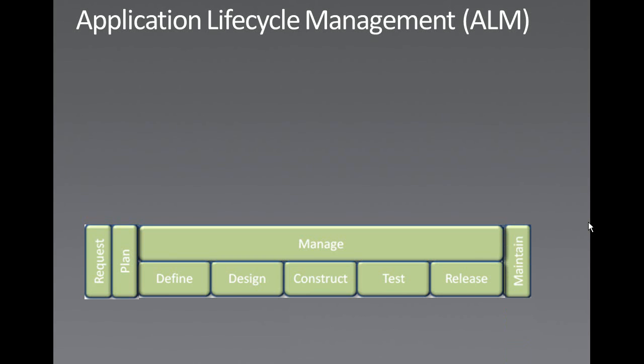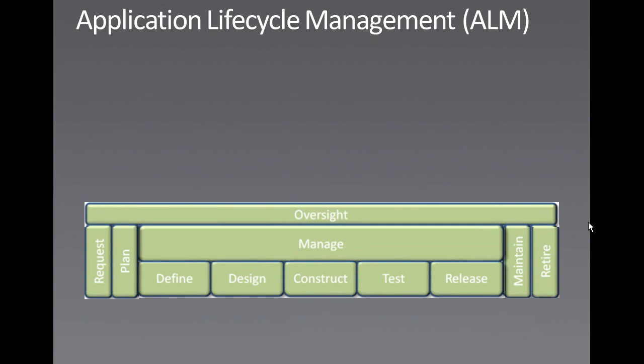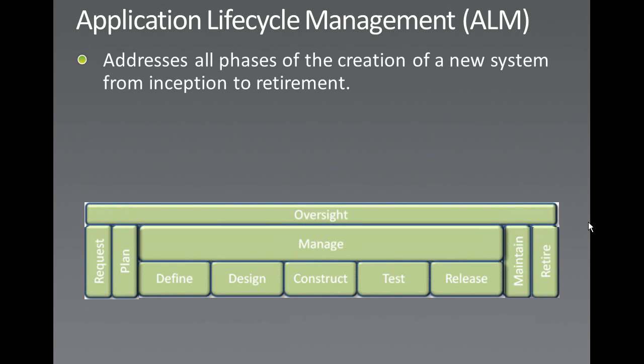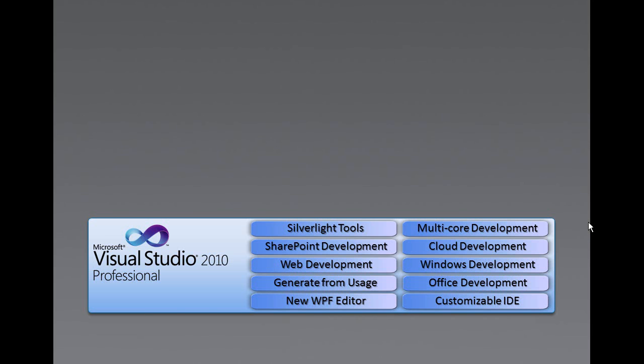After that there is something called maintaining the application, which means fixing bugs and giving support. After maintaining the application, there is a stage called Retirement — either the application will not be used anymore, or you will hand it over to the customer and won't receive any more requests for it. So ALM has oversight of all the stages of the application from its start as an idea to its retirement. A definition for ALM: addressing all phases of creation of a new system from inception to retirement.